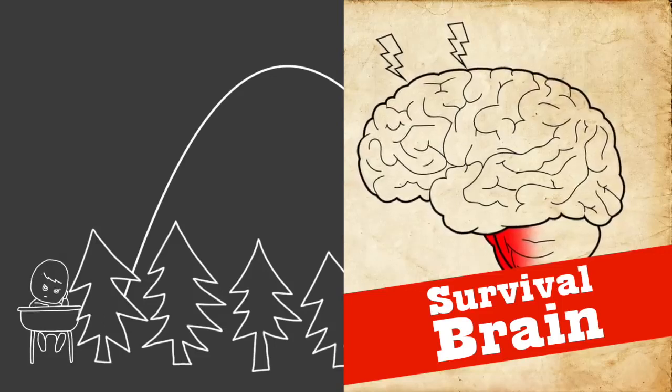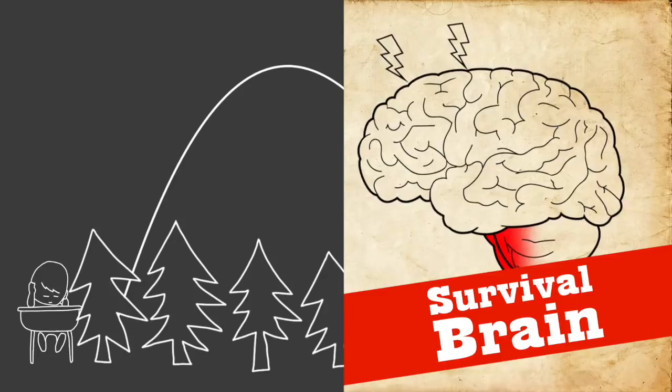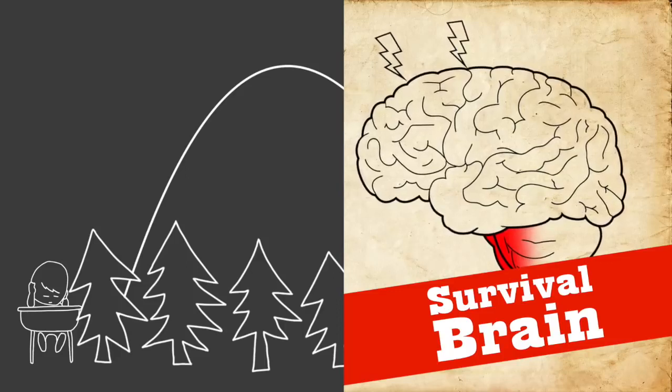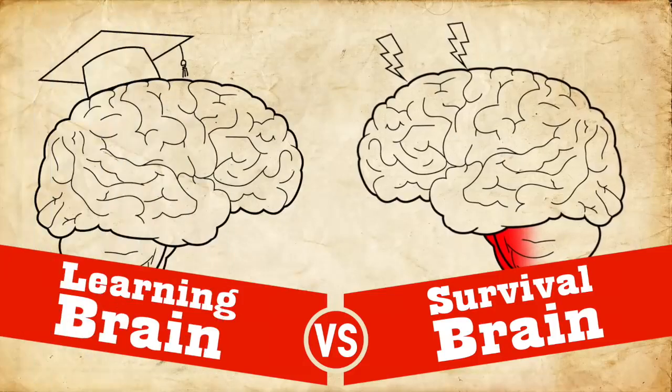And people in survival brain also really don't like making mistakes. And they are afraid of looking stupid too. So students in survival brain don't want to be picked on. They don't want to raise their hand and ask questions and look stupid. And so these people are also filled with doubt about their own ability to learn stuff. And they're afraid that other people can see how stupid they really are.